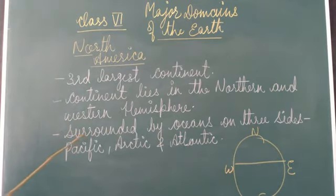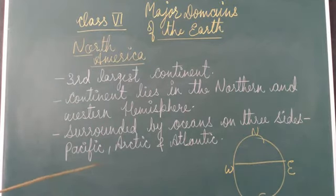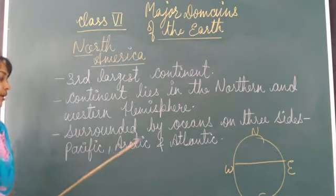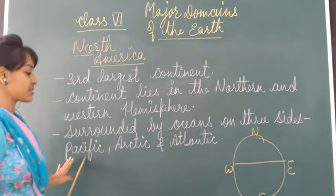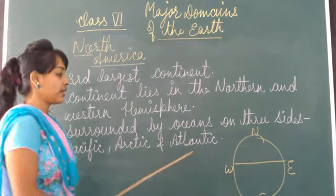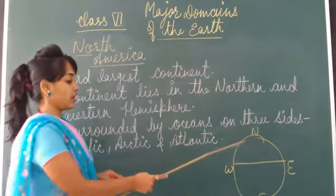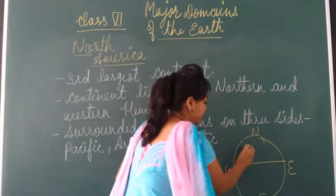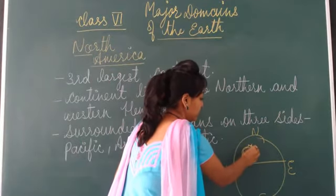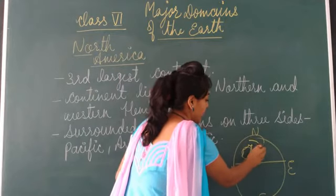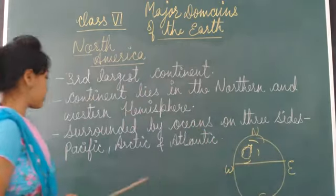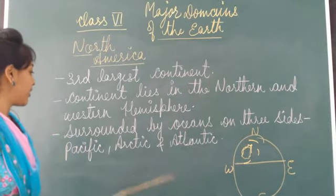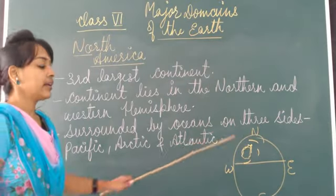Next, North America is surrounded by ocean on three sides — that is the Pacific, Arctic, and Atlantic Ocean. So this continent, North America, is surrounded from three sides by these three oceans: Pacific, Arctic, and Atlantic Ocean.